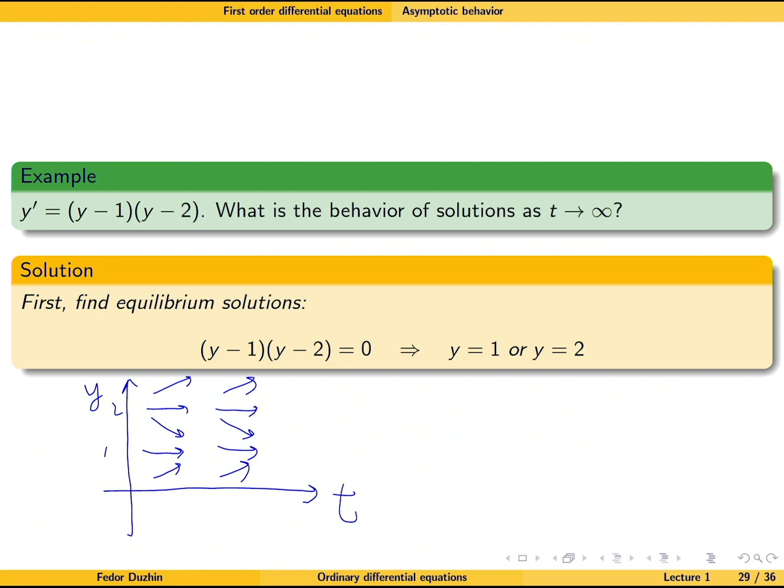So it means that, I think it's pretty clear, even from this sketch, that solutions are going to approach, whenever the initial point is below 2, solutions are going to approach 1. If it is above 2, then it's going to go to infinity.